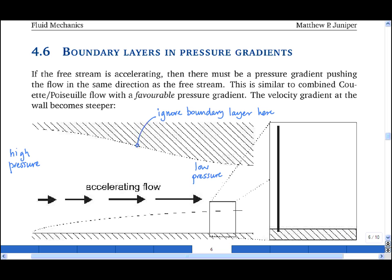So I'll draw some axes and plot Vx as a function of y. If there were no pressure gradient, then the boundary layer would look like this.